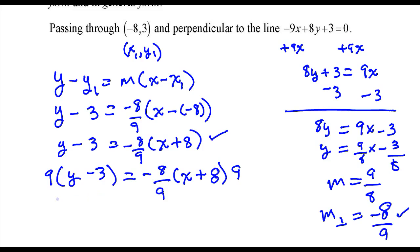Okay, so on the left-hand side, I have 9 times y minus 9 times a negative 3. That's a negative 27. On the right-hand side, this 9 and this 9 in the denominator are going to divide out. And that leaves you with negative 8 times x. That's a negative 8x. And negative 8 times a positive 8. That's a negative 64.